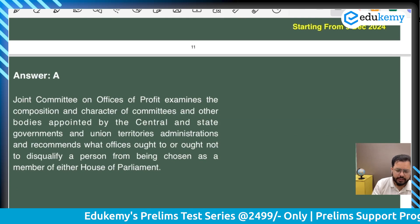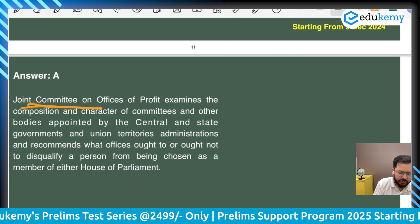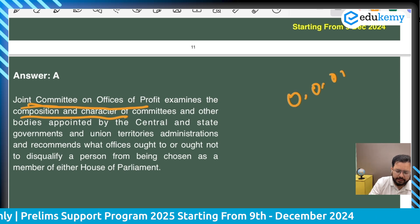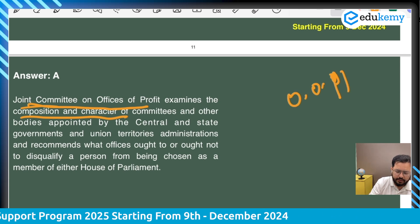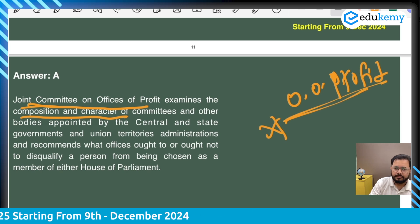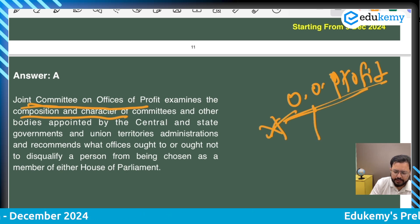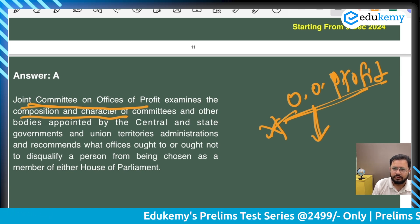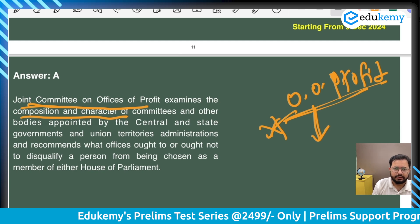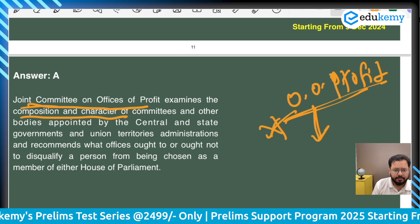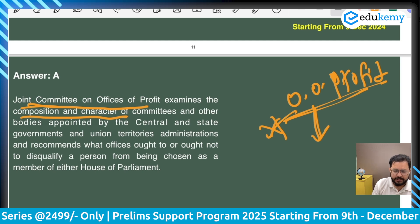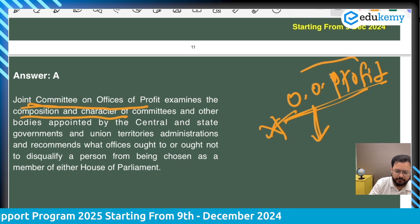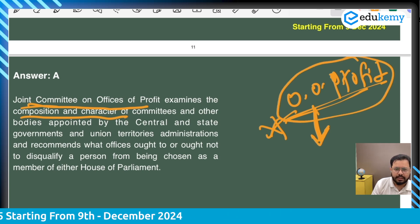You can see the solution — the Joint Committee on Office of Profit examines the composition and character of such offices. Now, office of profit is an important topic. If there is a disqualification on grounds of office of profit, who disqualifies the member? Do tell us in the comment section — let's see how many of you are actively engaging with these PYQs.